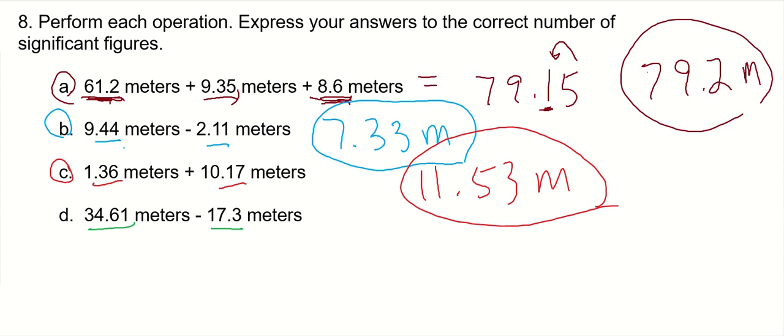So this number here, 17.3, that last digit... The last digit in the measurement is in the tenths place. This one is in the hundredths place. This is a better measurement.